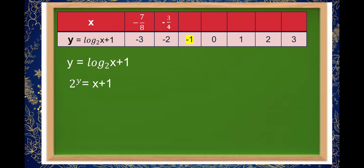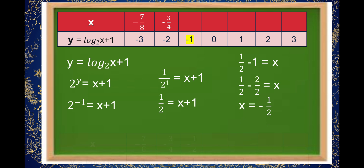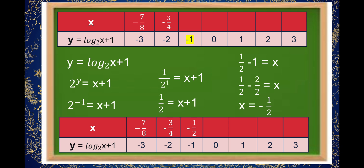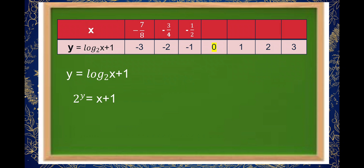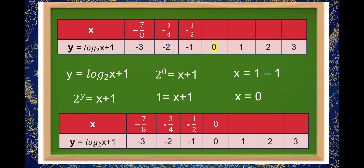For y equal to negative 1, substituting gives 2 raised to negative 1 is equal to x plus 1, so 1/2 is equal to x plus 1, and subtracting 1 from both sides gives x is equal to negative 1/2. For y equal to 0, 2 raised to 0 is equal to x plus 1, so 1 is equal to x plus 1, and x is equal to 0. So if y is equal to 0, x is also equal to 0.